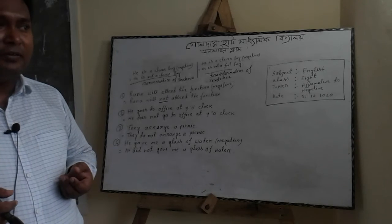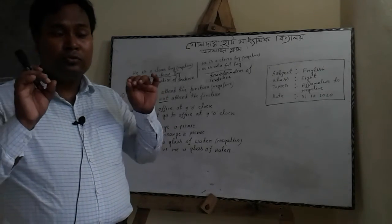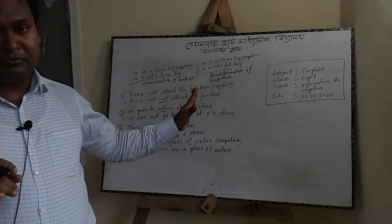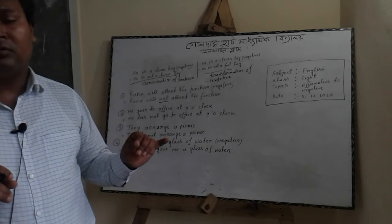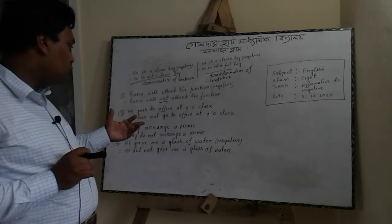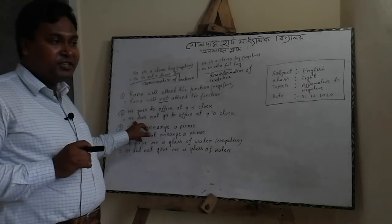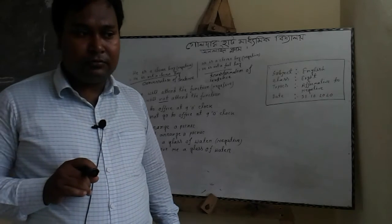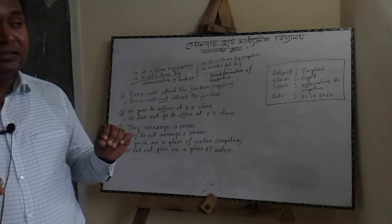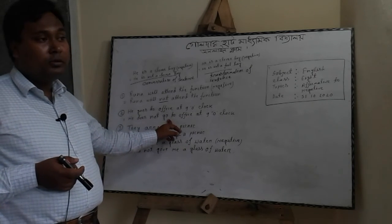If any sentence has no auxiliary verb and we want to transform it into negative, we need to determine what kind of sentence it is. If it is present tense, we use 'do not' or 'does not' before the main verb. If the subject is third person singular, we use 'does not' before the verb. If the subject is first person, second person, or third person plural, we use 'do not' before the verb.